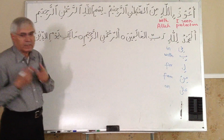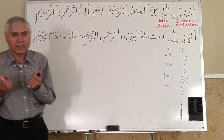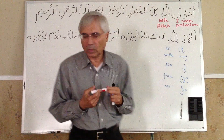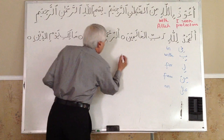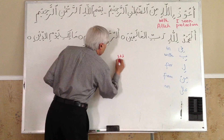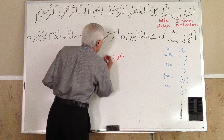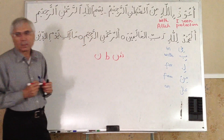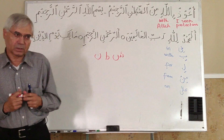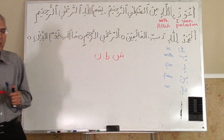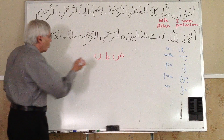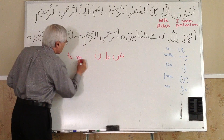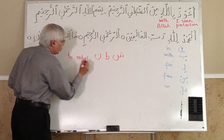As I said, 99% of Arabic words start with three letters. So let's look at these three letters: Sheen, Thaw, and Nun. These three letters — Sheen, Thaw, and Nun — their meaning in English is 'to rebel.' To rebel.